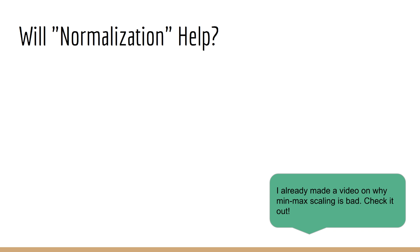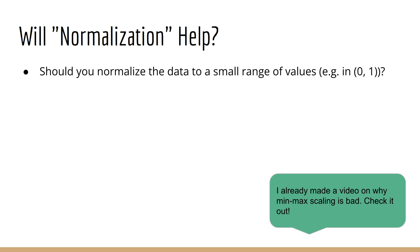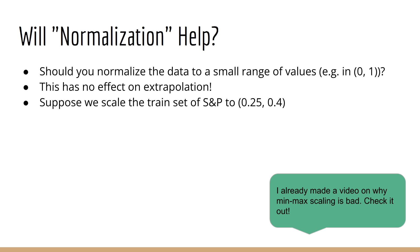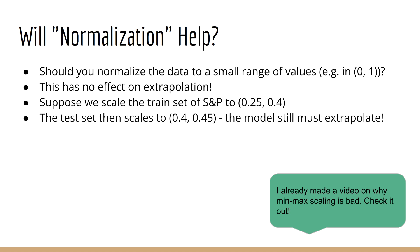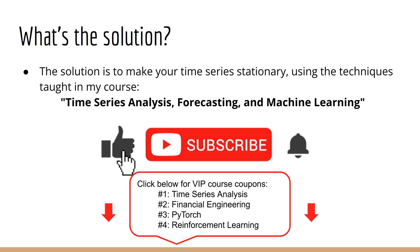One mistake some beginners believe will solve this issue is to normalize the data so it falls into a small range like 0 to 1. Unfortunately, this does absolutely nothing, because all the values are scaled by the same factor. If you scale down the S&P so the train set goes from 0.25 to 0.4, then correspondingly the test set goes from 0.4 to 0.45 — the test set is still outside the range of the train set, and nothing has changed. The solution is to make your time series stationary using techniques such as those taught in my latest course on time series analysis.